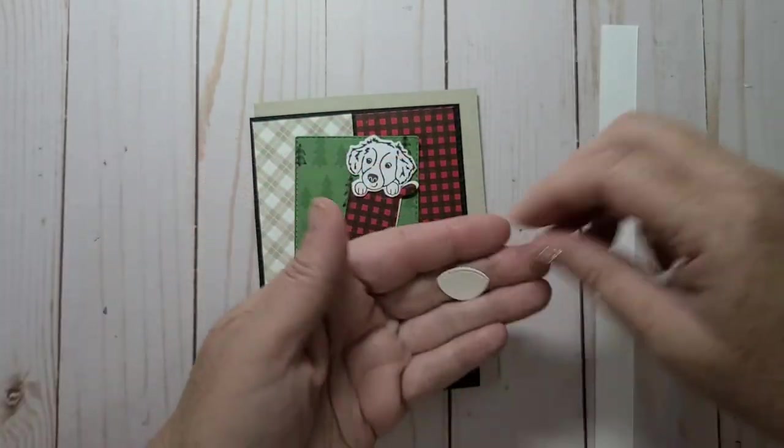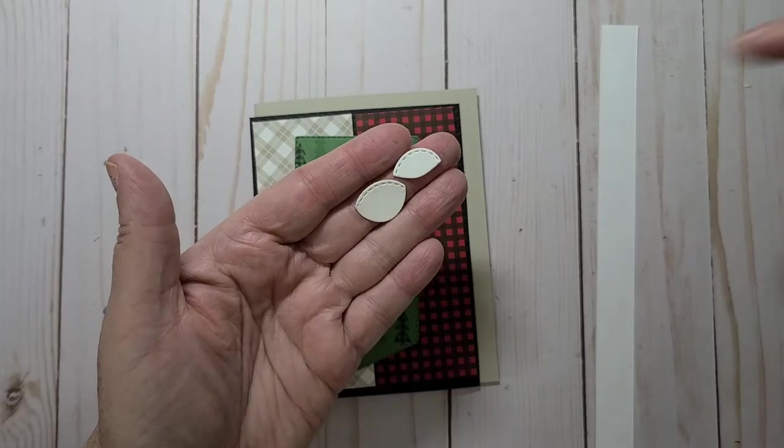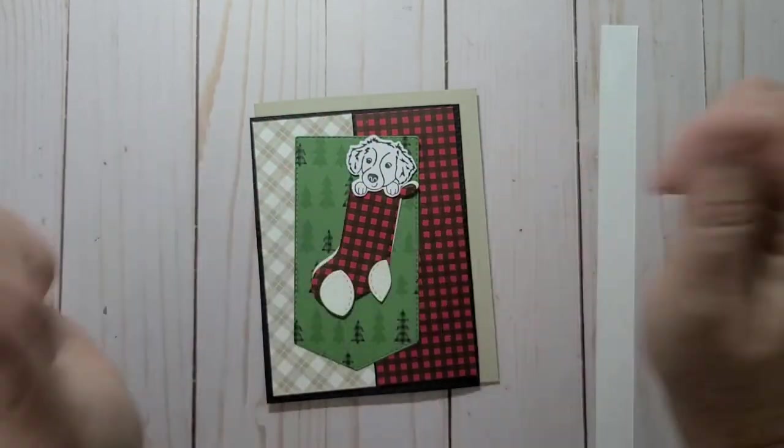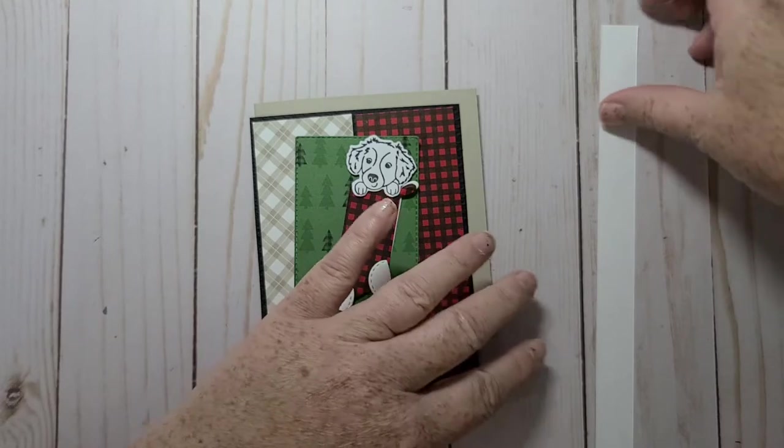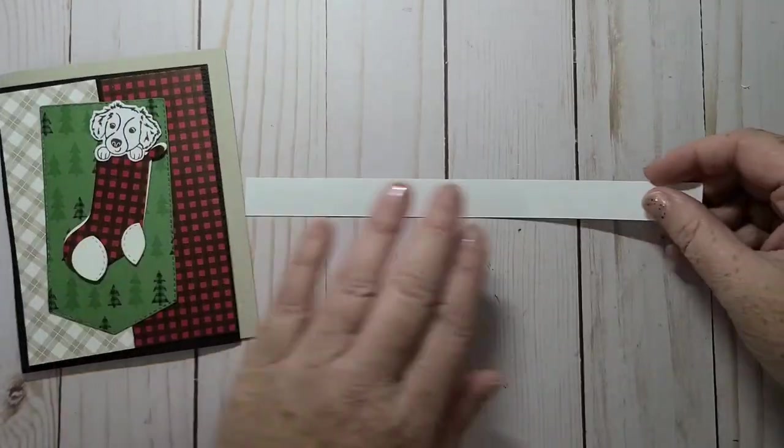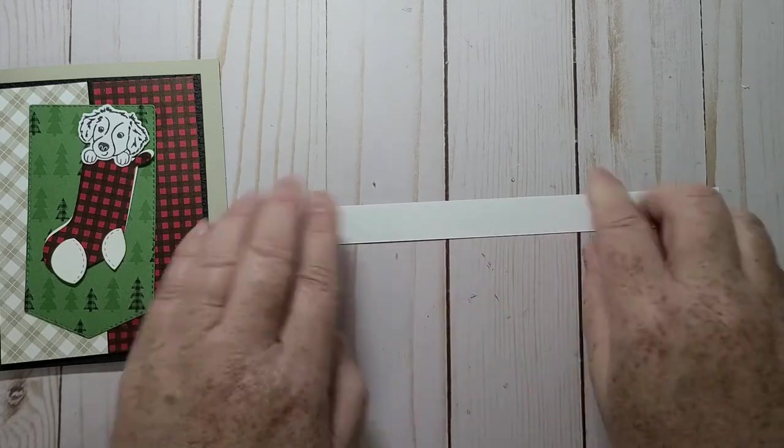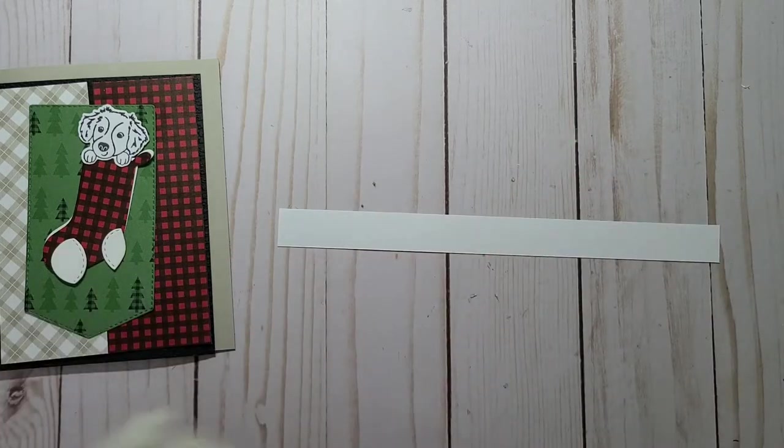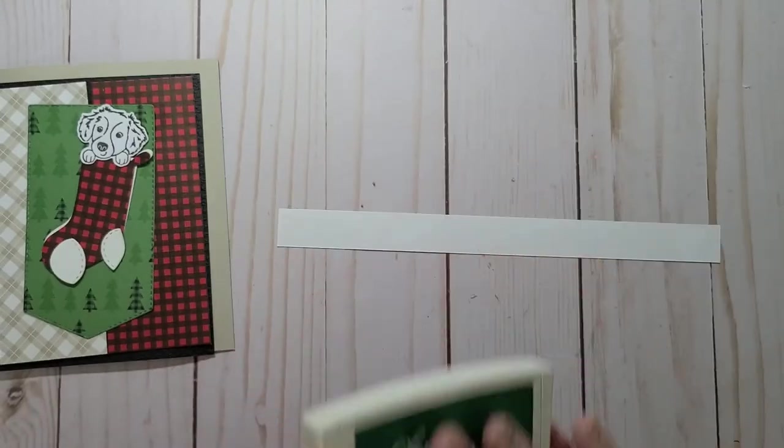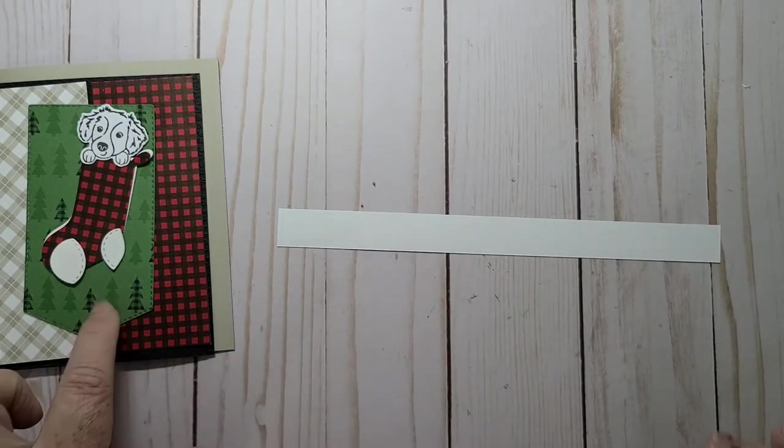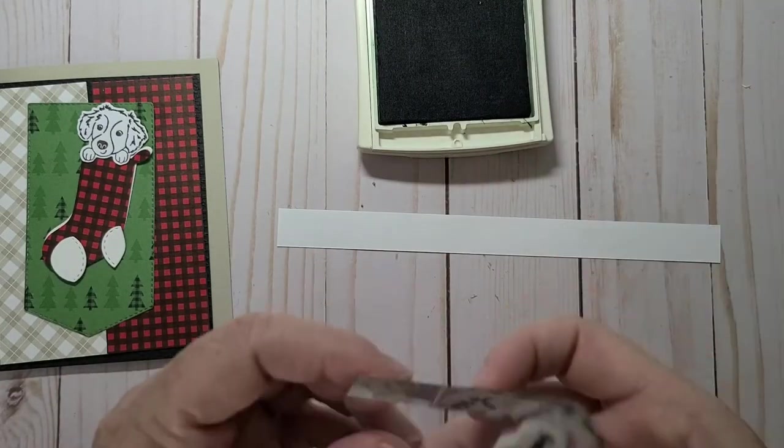I'm going to color him in, and then I did Basic White. I'm going to add those to my sock, and then for my sentiment I just cut a strip three-quarter inch high of the Basic White, and I'm going to stamp my sentiment in Garden Green because that's the color of green that is in my DSP.